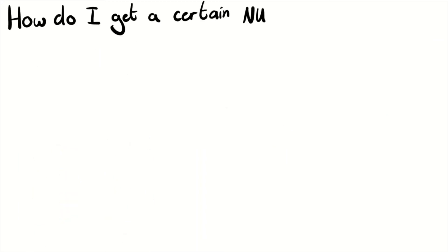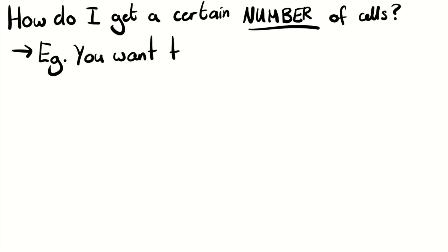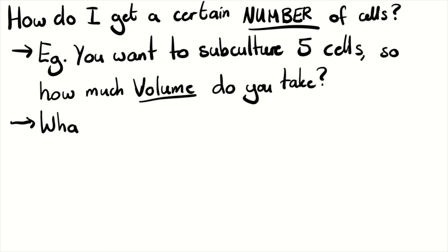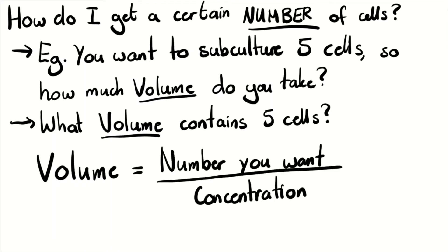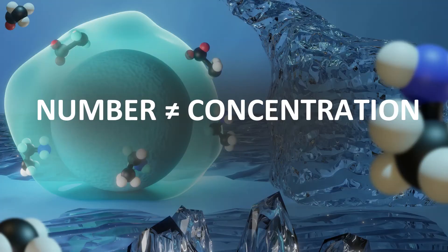Another common calculation is how do you get a certain number of cells? For example, you want to subculture 5 cells into your new flask — how much volume of your existing cell suspension do you take? This is asking for a number, 5 cells, not 5 cells per mil. This is why the distinction between number and concentration is really important.